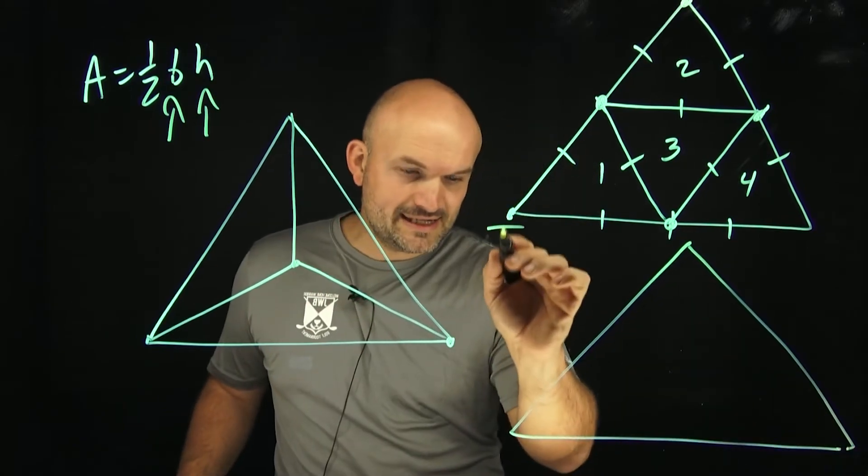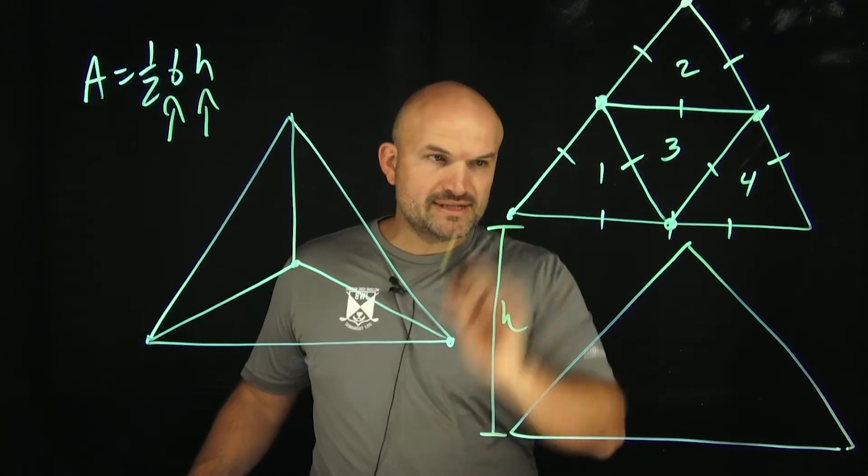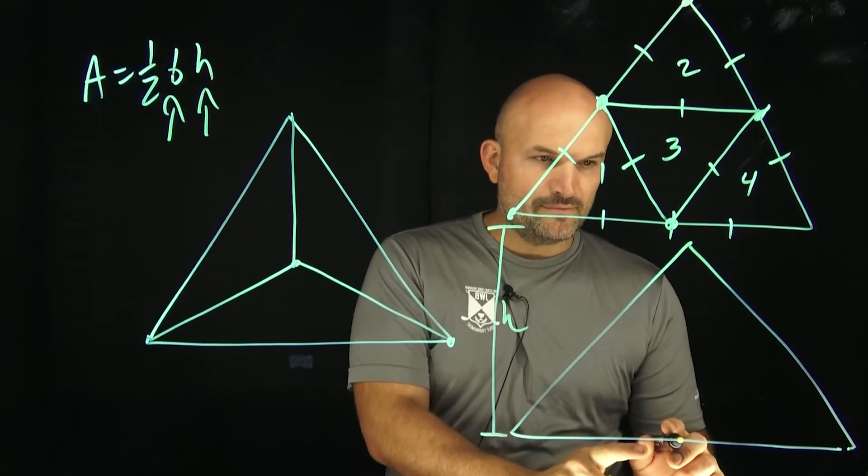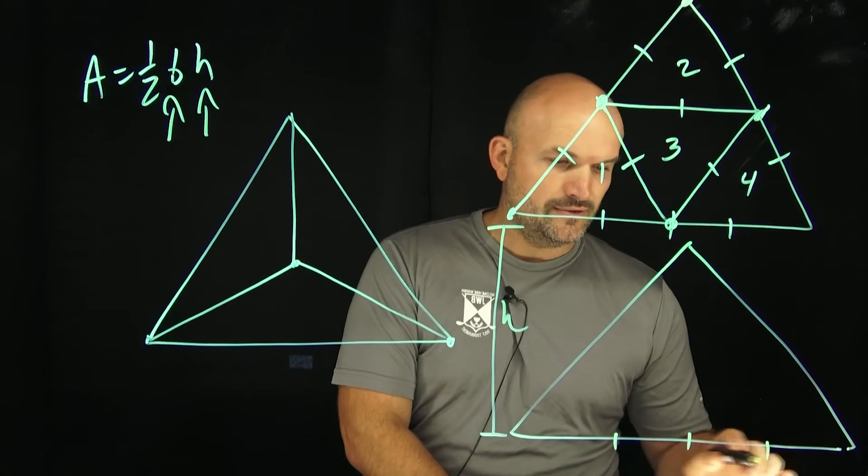Now we could say the height here from the bottom to the top. So we could say I have the height the same. What about if I just created the base? What about if I created four different bases? So I say one, two, three. Now again, remember, they don't have to be congruent.